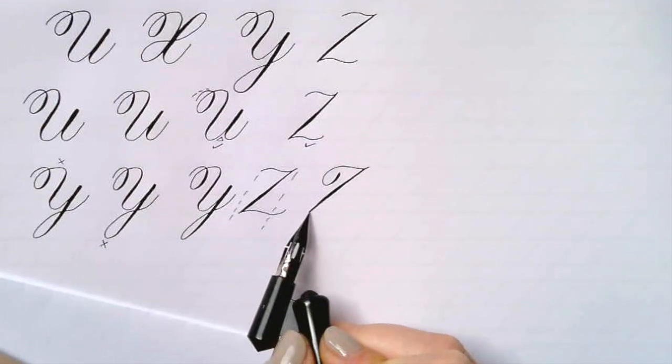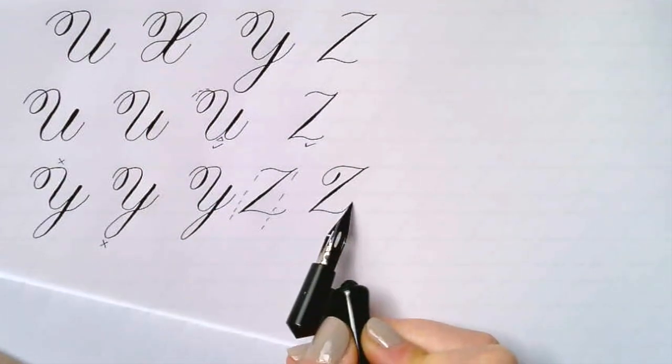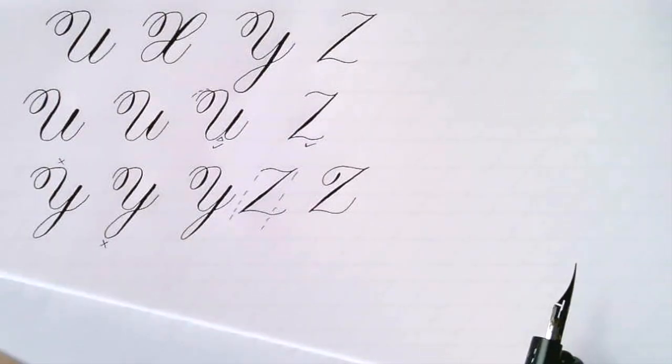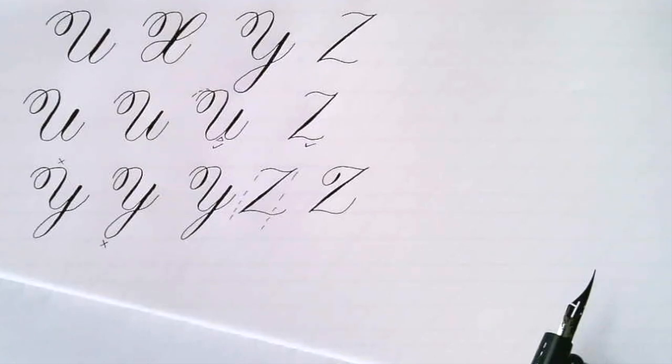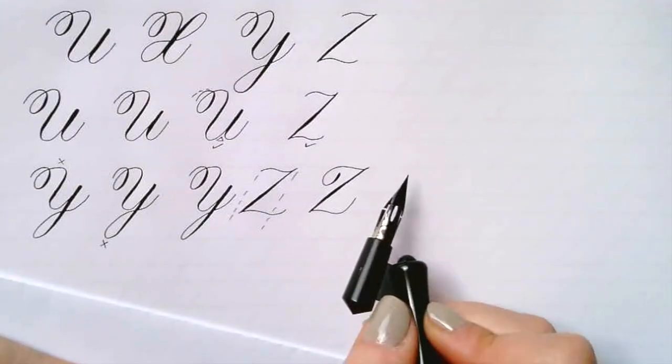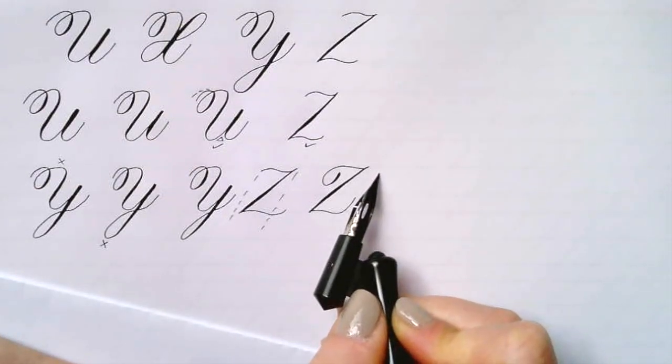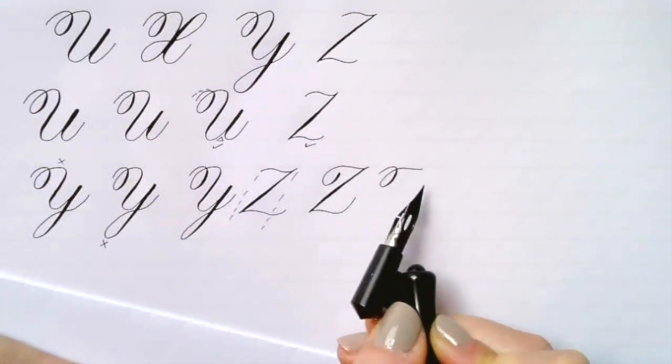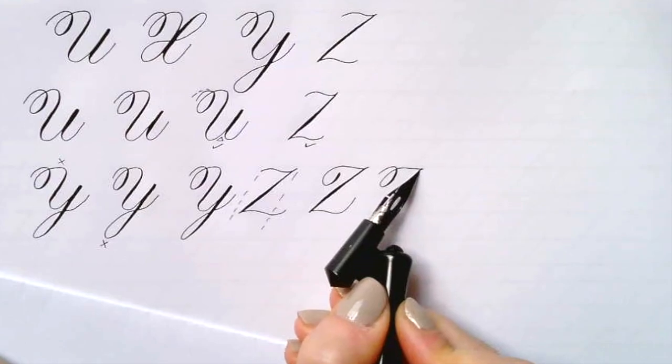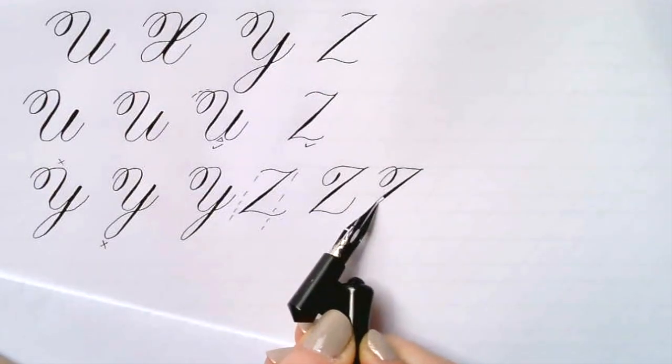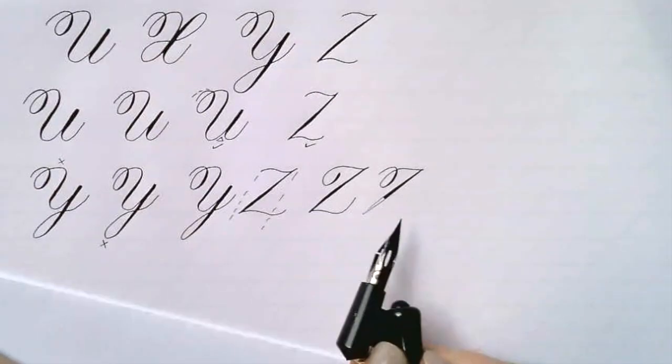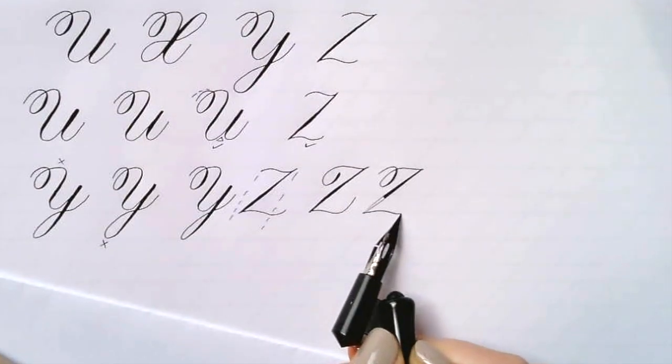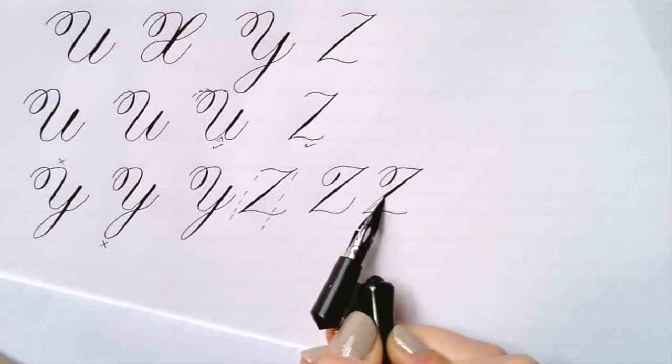I'm just showing you a couple of variations to make the Z a little more interesting. You can try that. Make sure you go all the way over, make sure you have enough ink in your pen, and you can pull that down. There we go.